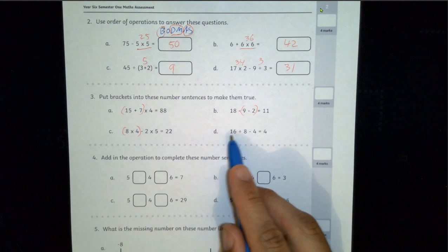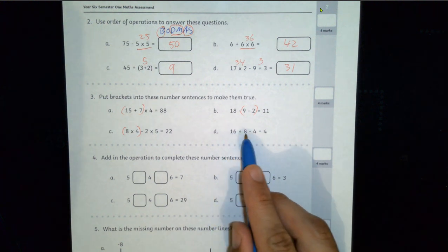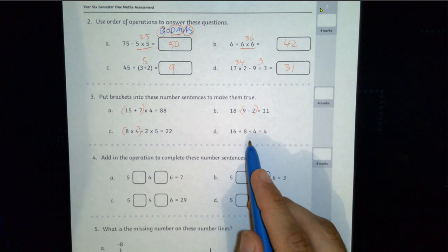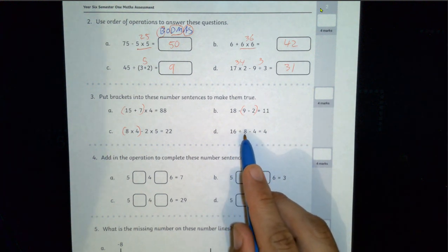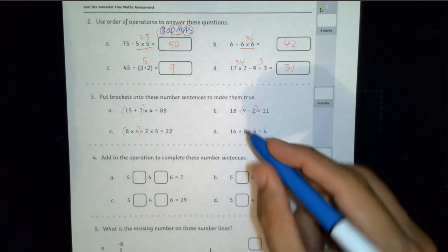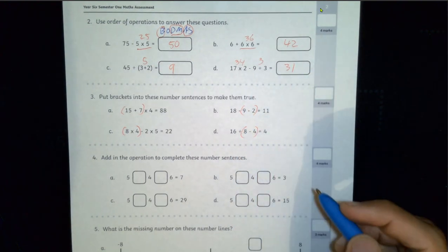I'm going to do the same again. I'll put brackets around the first two and see how that goes. 16 divided by 8 will get me 2. 2 take 4 won't get me 4. So if I can't go around the first two numbers, I guess it has to go around the second and third number. 8 take 4 is 4. 16 divided by 4 is of course 4.